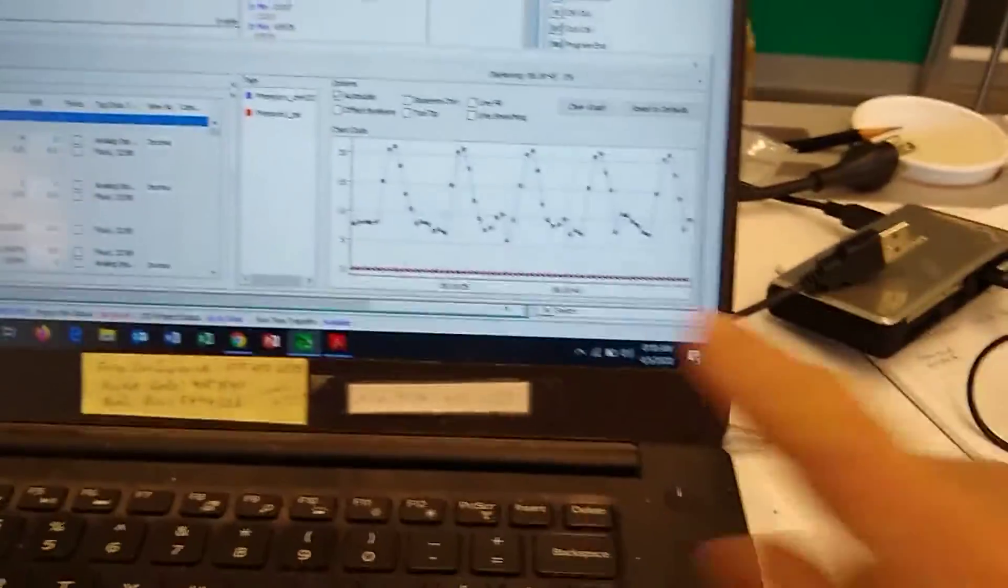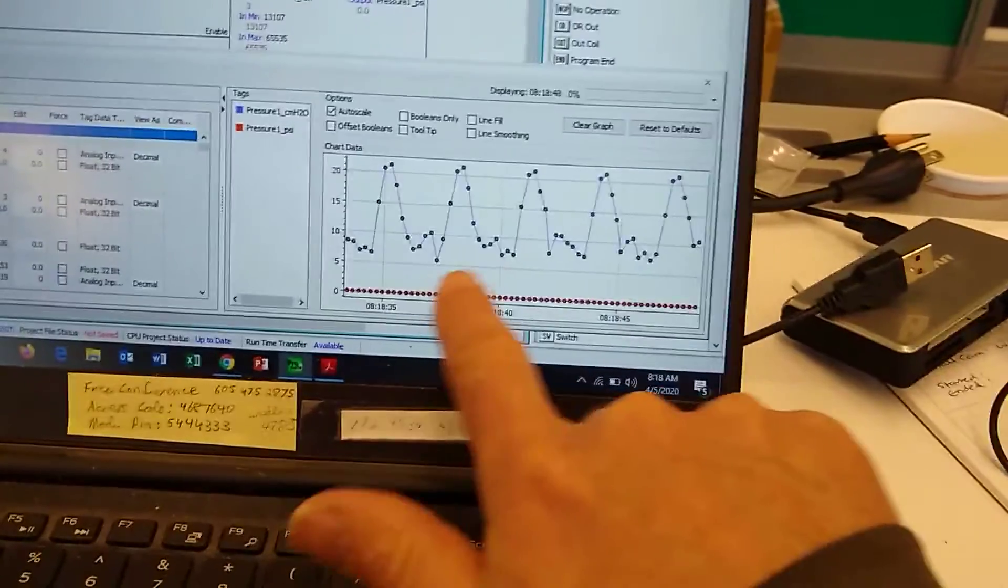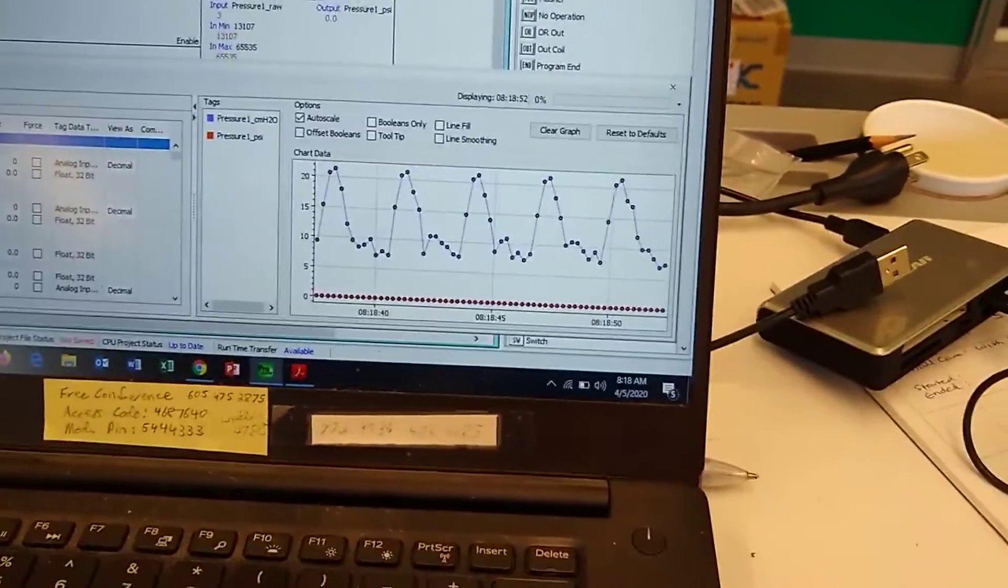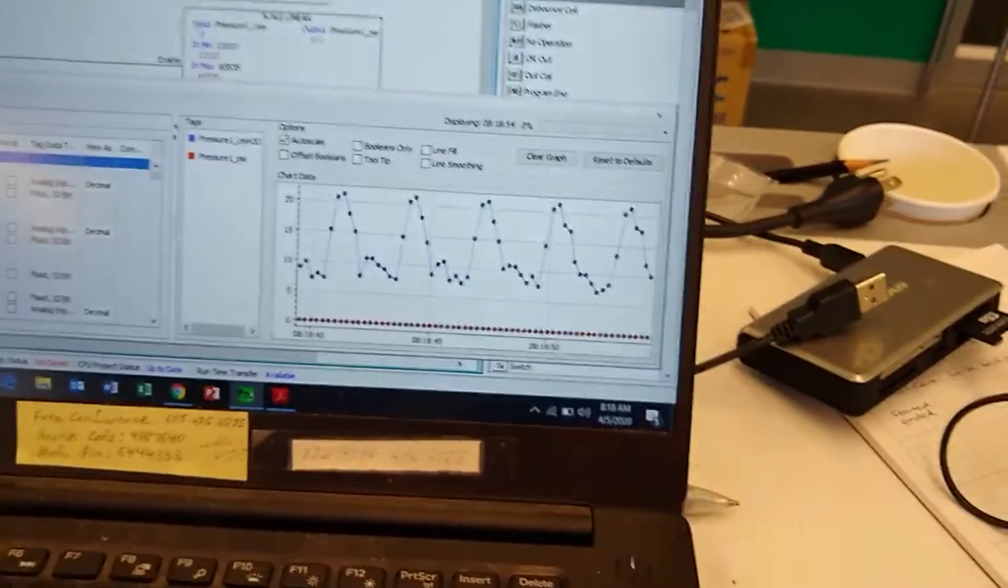Over here, we are measuring our pressure in centimeters of H2O. We can see our min pressure is at about 7, and our max pressure is a little over 20.